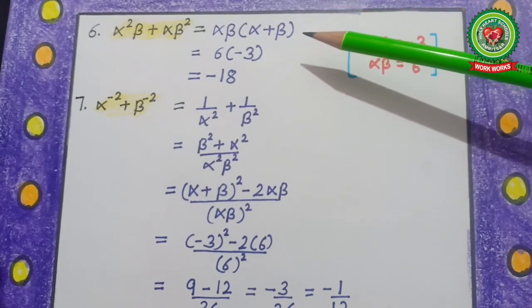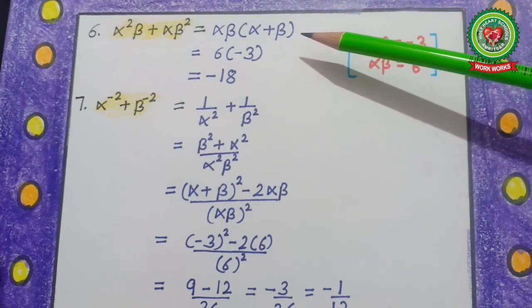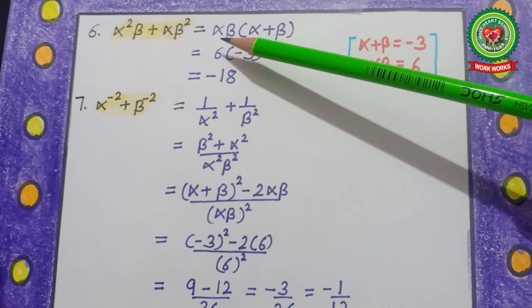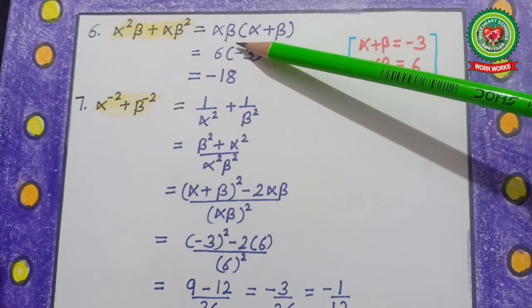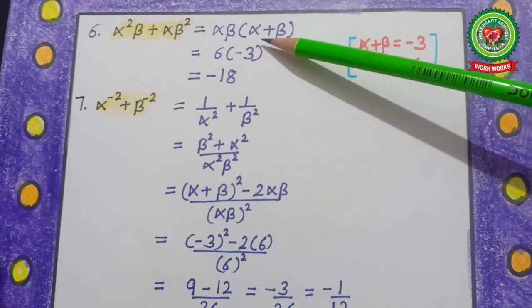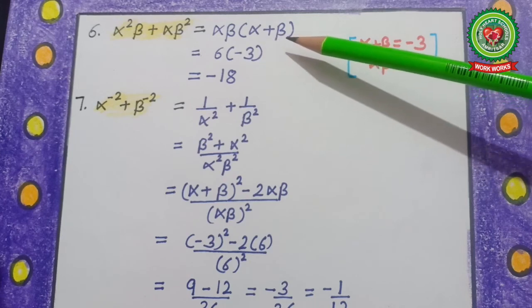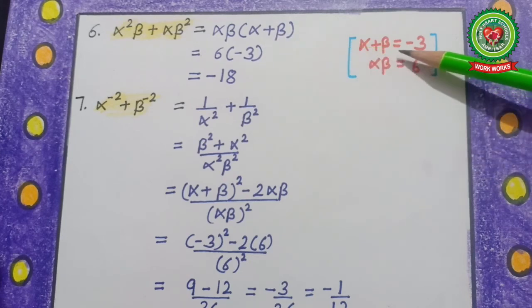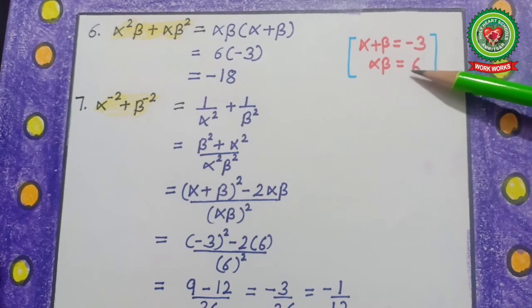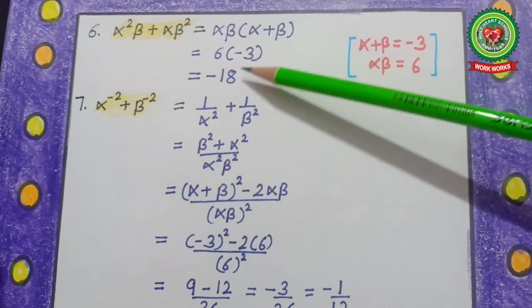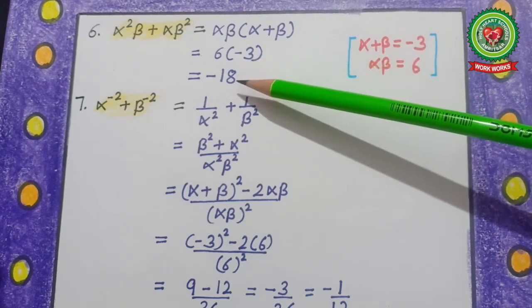Question number 6: α²β+αβ². Taking αβ as common factor, we get αβ(α+β). Filling in the values of α+β = −3 and αβ = 6, our answer is −18.